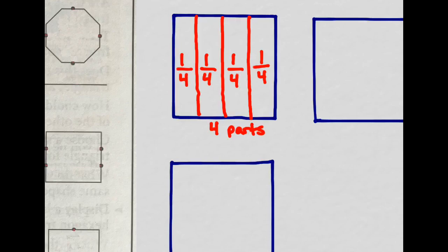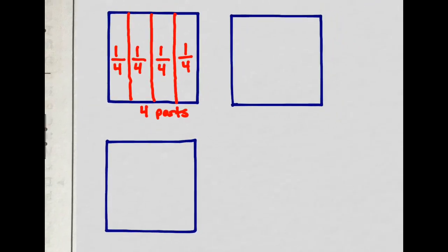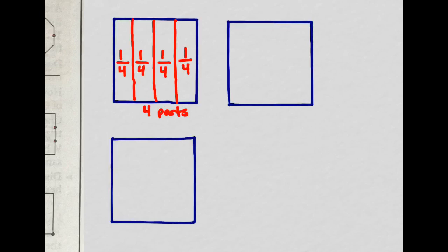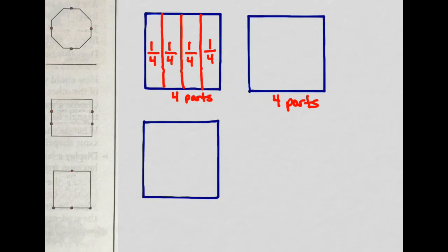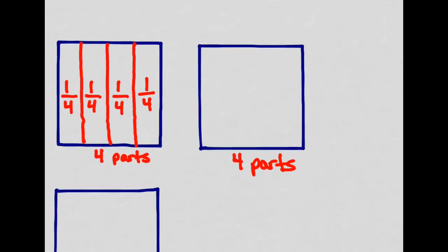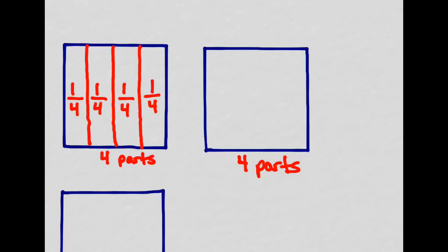The other thing we need to talk about is how you can divide a shape in different ways using the same number of parts. For this square, we still want to do four parts, just like we did before. I also want to divide this third square here into four parts. Let's look at this one first. We already divided it in four parts up and down. This time, I'm going to divide it into fourths going across.